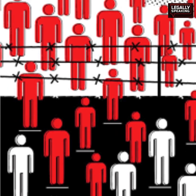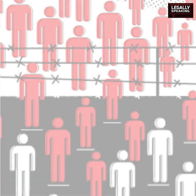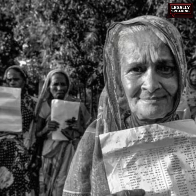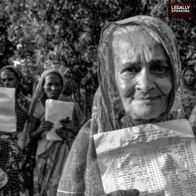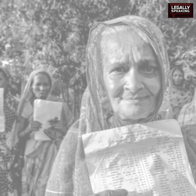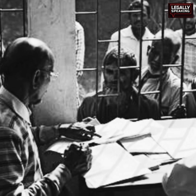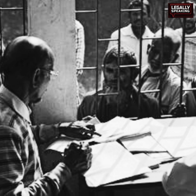Individuals who migrated to Assam between January 1, 1966 and March 25, 1971, original inhabitants of Assam and their descendants — provided their Indian citizenship is confirmed by the registering authority — and those who can provide documents issued until midnight on March 24, 1971, as specified in the list of admissible documents for citizenship.